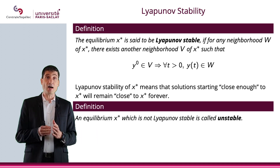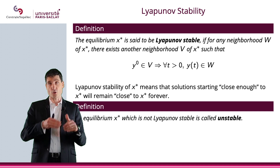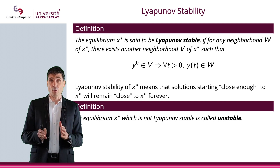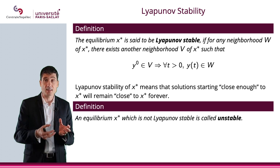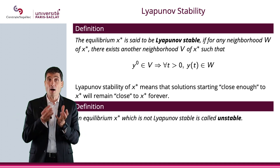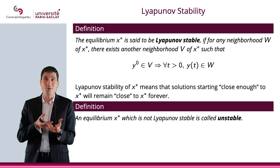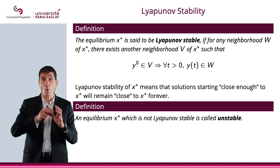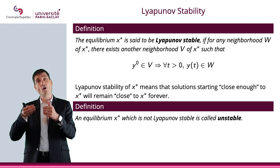Now let's define what it means to be Lyapunov stable for an equilibrium. Starting with an autonomous ODE with equilibrium x star, x star will be Lyapunov stable if for any neighborhood w of x star, there exists a neighborhood v of x star, such that when y0 is in v — when you start your initial value problem with y0 in v — then for any positive t, y of t will stay in this neighborhood w of our equilibrium.